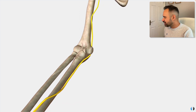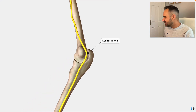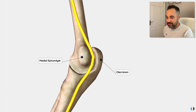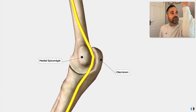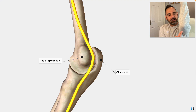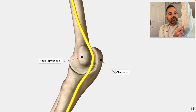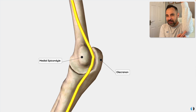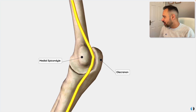At the elbow it reaches a very interesting structure — the cubital tunnel, made up of the medial epicondyle and the olecranon. To find this on yourself, bend your elbow to 90 degrees with your palm facing you. You'll feel the bony point at the back of the elbow — the olecranon — and then working medially you'll find the other bony prominence, the medial epicondyle. The small soft area between them is the cubital tunnel, and that's where the ulnar nerve runs.